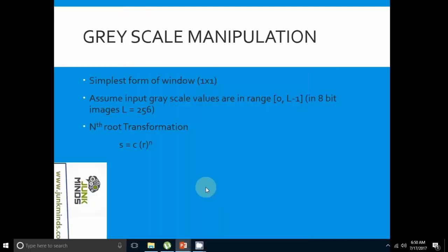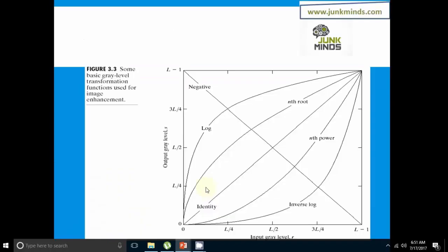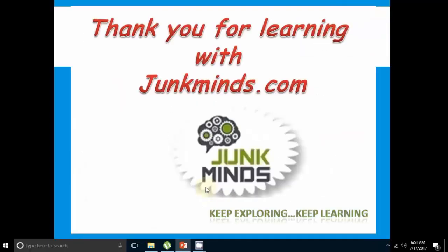Grayscale manipulation is the simplest form of window, represented as 1×1. We assume input grayscale values are in the range [0, L-1] in 8-bit images where L=256. The N-th power transformation is given as S = C·R^N. This is the basic gray level transformation function used for image enhancement, showing a graph of input gray level R versus output gray level S.